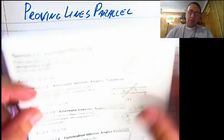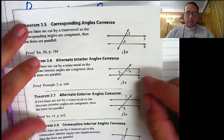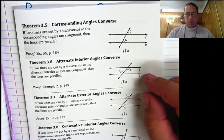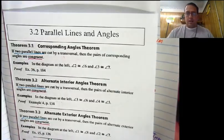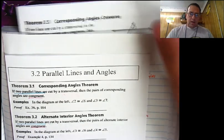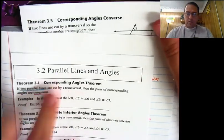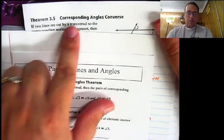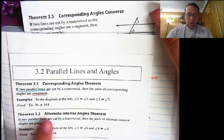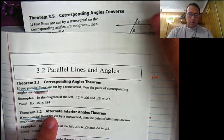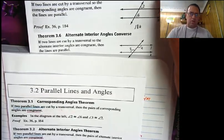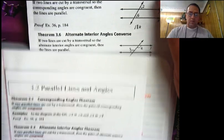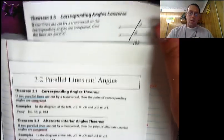Now, you will notice that these theorems here look very, very similar to the theorems we had last time. We have the corresponding angles theorem, and today we're looking at the corresponding angles converse. We had alternate interior angles theorem, today we have alternate interior angles converse. They're very, very similar.